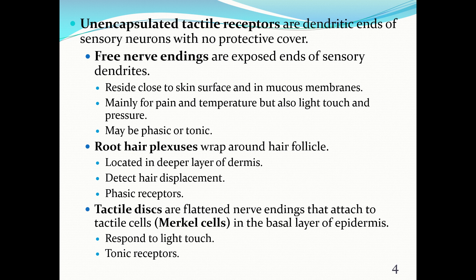Receptors may be phasic or tonic. Root hair plexuses are located in deeper layers of the dermis; they detect hair displacement and are generally phasic receptors. The tactile discs, which respond to light touch, are tonic receptors. Phasic receptors can be phased out, meaning that if the sensation occurs for a long enough period of time you become unaware of it, whereas tonic receptors are going to be sensed every time a stimulus occurs.